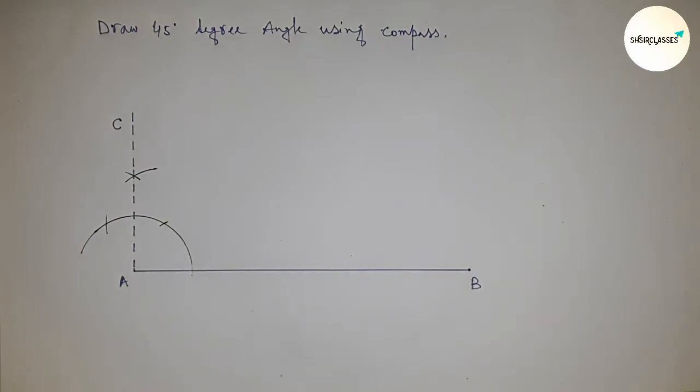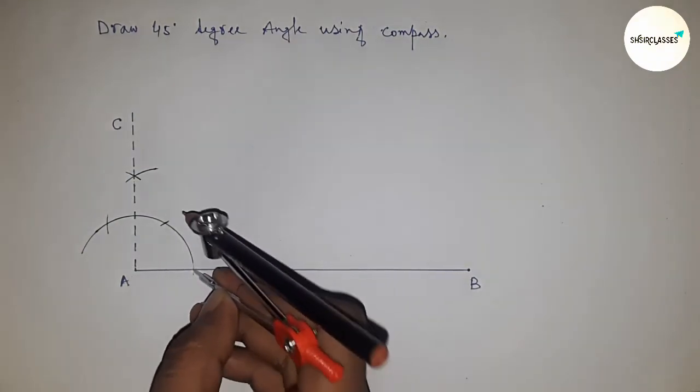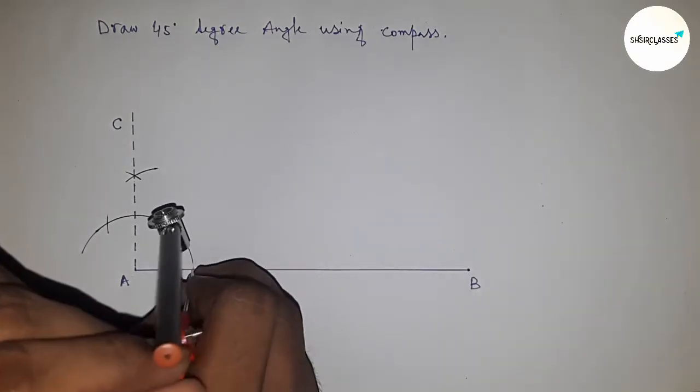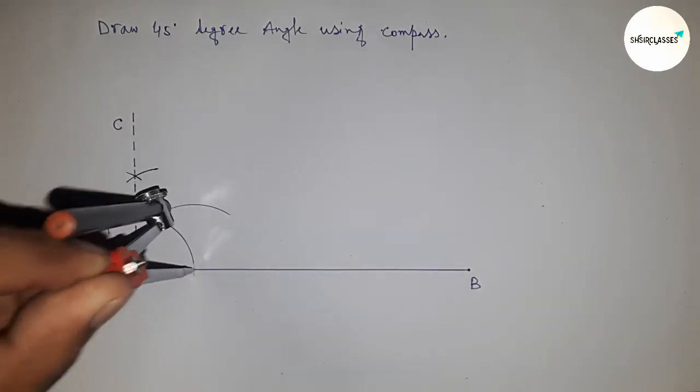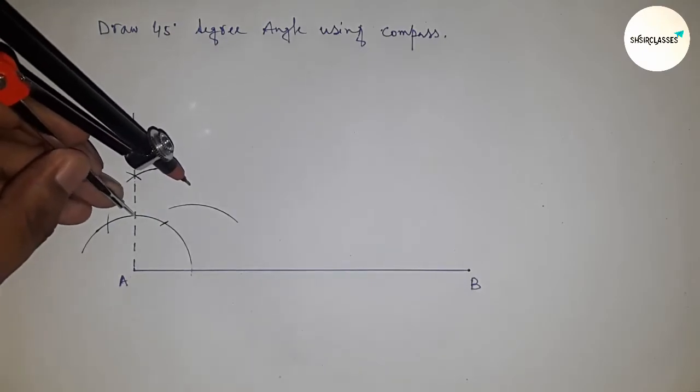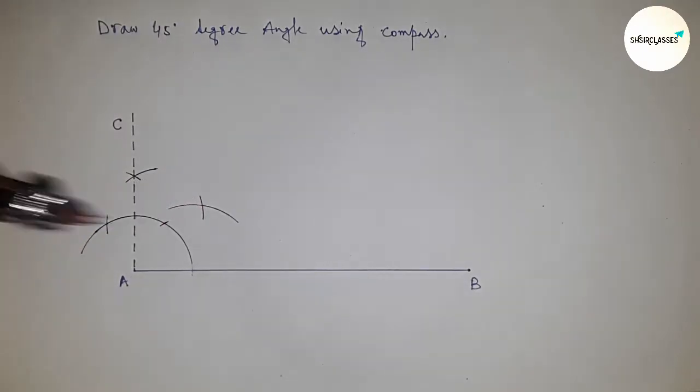Angle CAB equals 90 degrees. Now I'm going to bisect it. Take greater than half of this length and draw an arc here. With the same length, place the compass here and cut the arc this way.